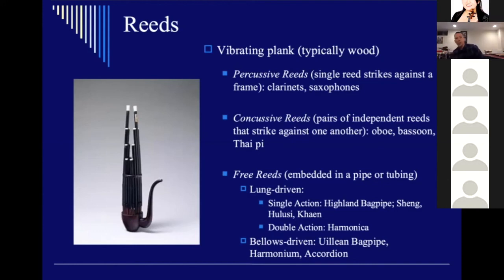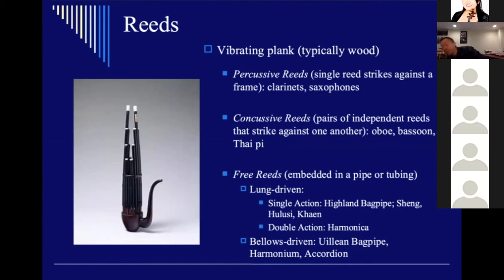A bellows-driven aerophone would be something like an accordion — this one is quite old and in desperate need of repair, so it sounds somewhat pathetic. The way it works is that a system of tubing inside the instrument, called bellows, pushes the air through. The accordion is probably the most common bellows-driven free reed aerophone. The Indian harmonium is another common example, as is the uilleann bagpipe of Ireland.